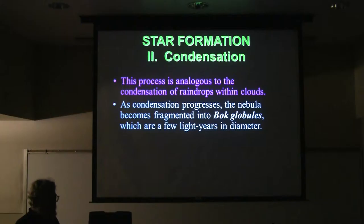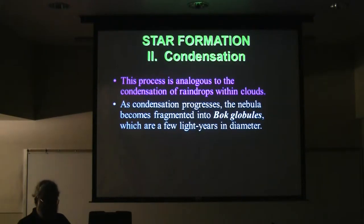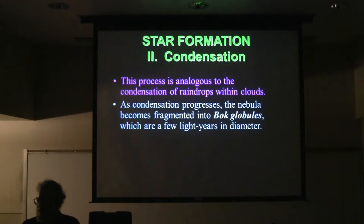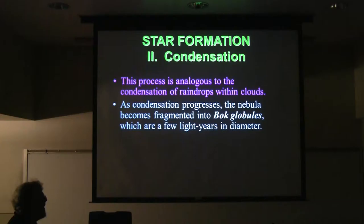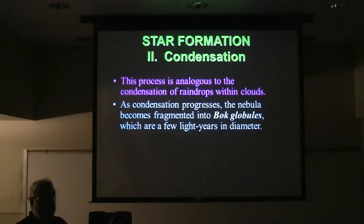After a while, the nebula — being several hundred light-years in diameter — starts to break up into little pieces as condensation occurs. The whole thing doesn't scrunch down to one spot, but within it all scattered throughout are little condensations called Bok globules, after Bart Bok who studied this extensively. These are only a few light-years in diameter instead of a few hundred.